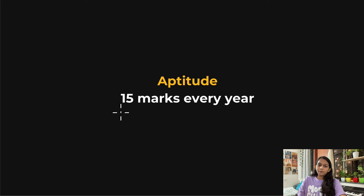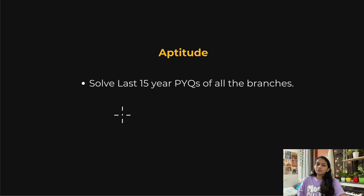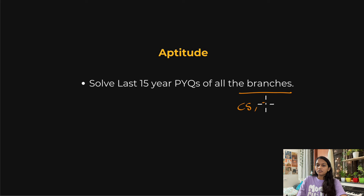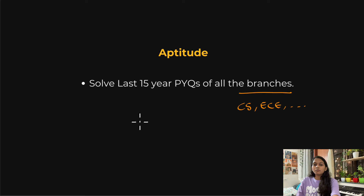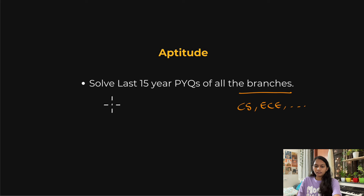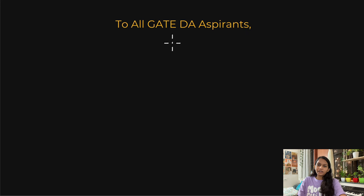For aptitude, which is worth 15 marks, you should solve the last 15 years of PYQs from all branches — CSE, EC, civil, mechanical, etc. Solving PYQs from all branches will be more than enough for aptitude. You don't have to prepare anything extra apart from this — just practice the last 15 years of PYQs from all branches.